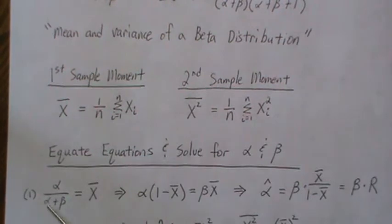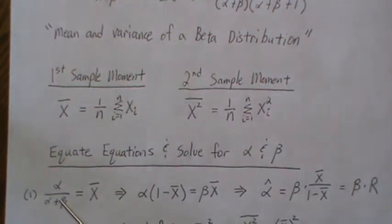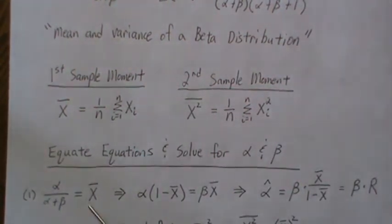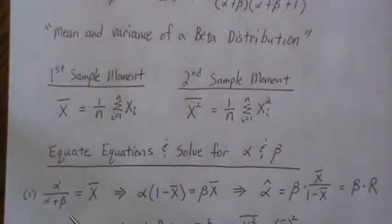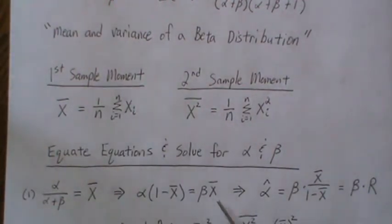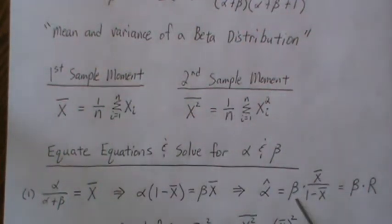So here, step one, we equate the first moment, sample and population. Now we back solve for alpha here. So we multiply up and then the alpha beta, and then we subtract one over and factor out an alpha and divide. And so the method of moments estimate for alpha is this right here. So now once we find beta, then we can plug it back into this and that would be the alpha estimate.